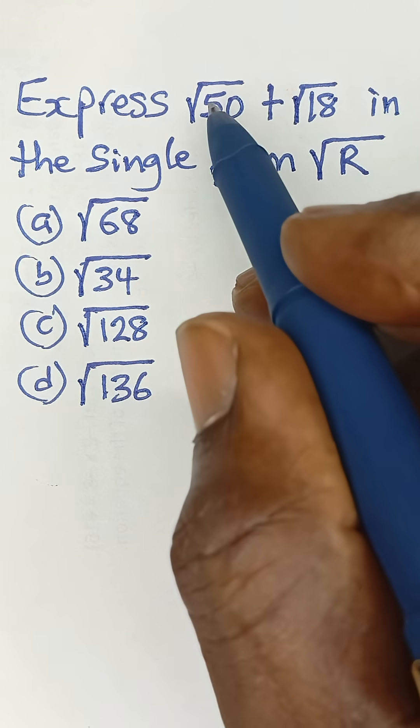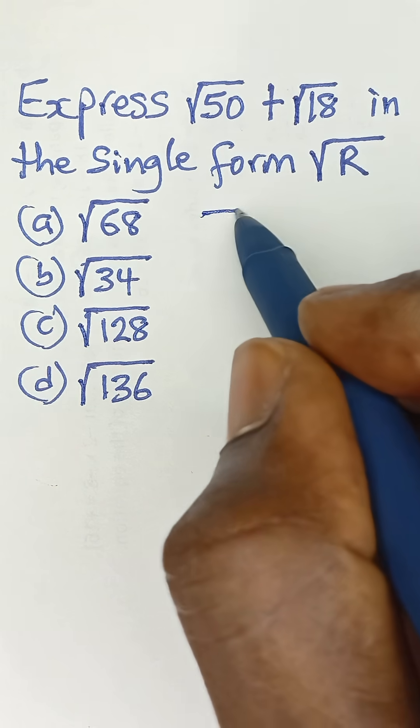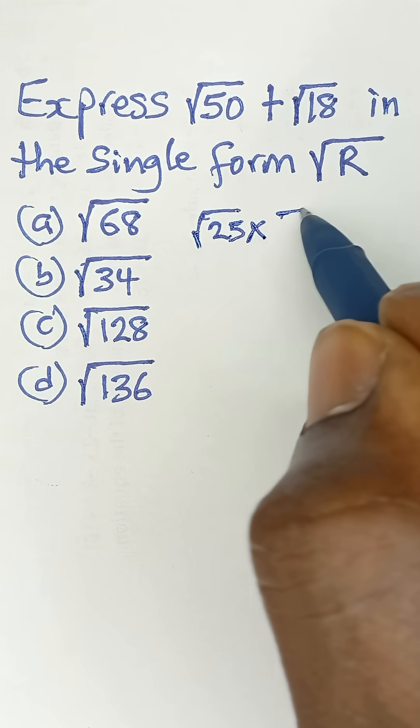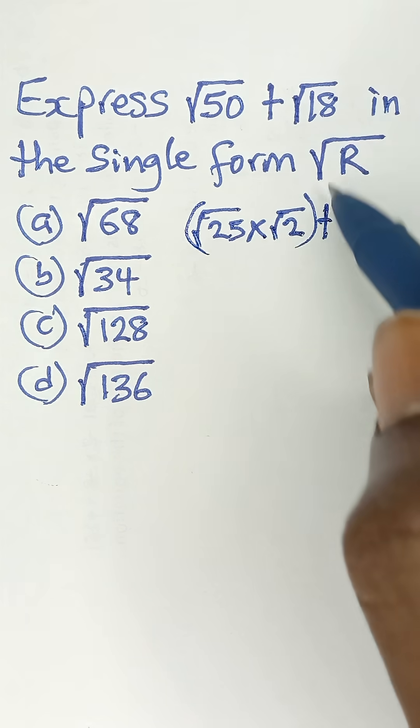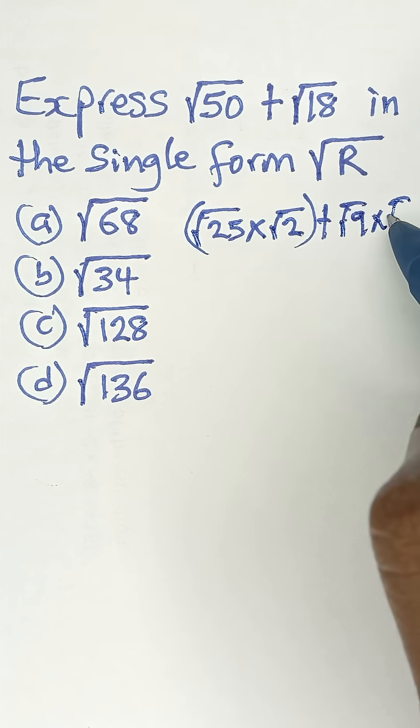Now, the breakdown of root 50 will give us root 25 multiplied by root 2, plus the breakdown of root 18 to give us root 9 times root 2.